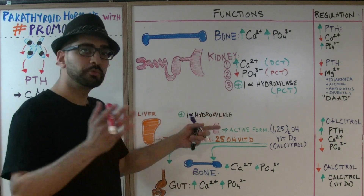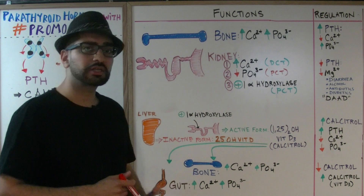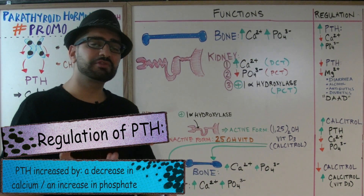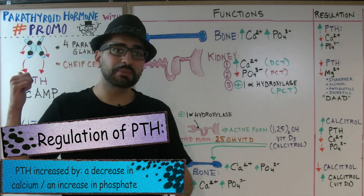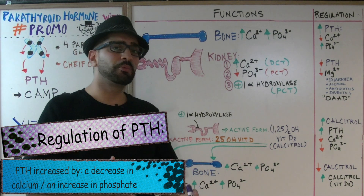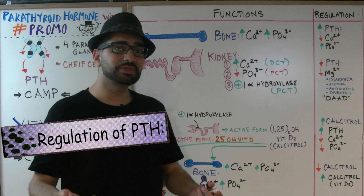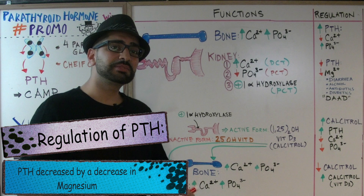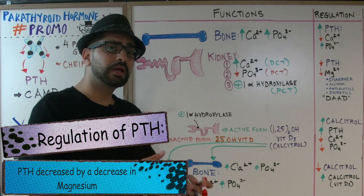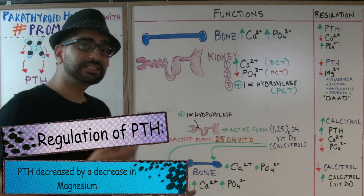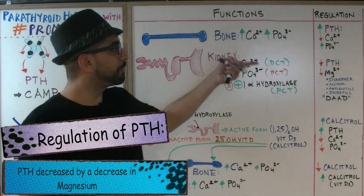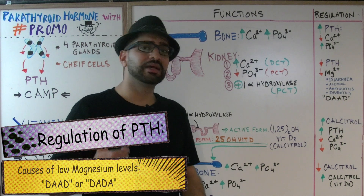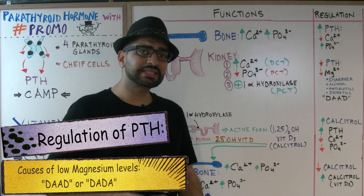Let's talk about the regulation of PTH. When we have a low level of calcium or a high level of phosphate, that's going to stimulate the parathyroid glands to release more PTH. On the other hand, magnesium is a very important mineral for normal PTH secretion — if magnesium levels are low, it's going to lead to low parathyroid hormone levels.